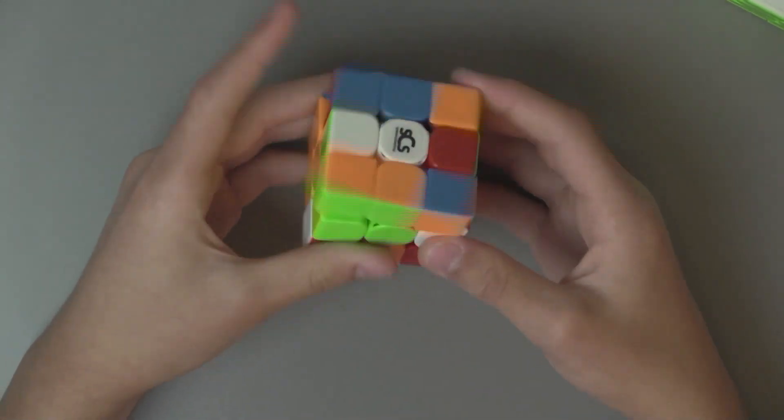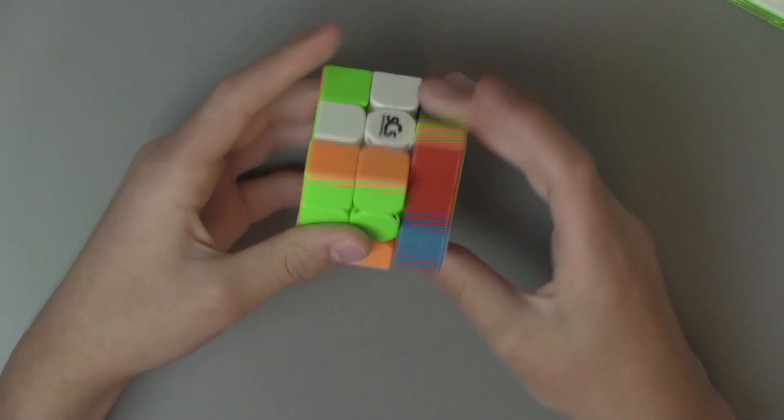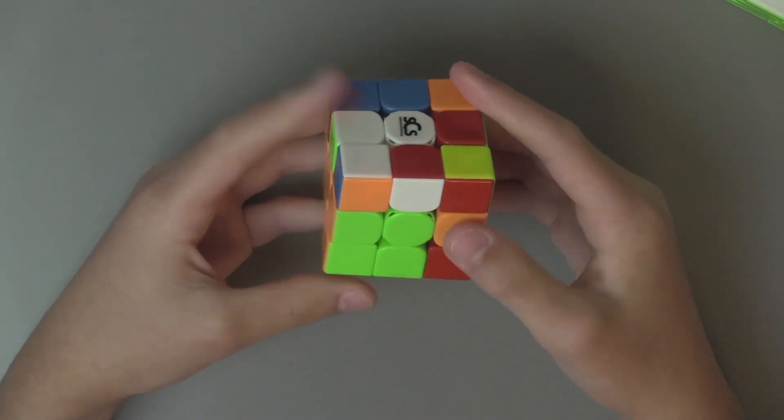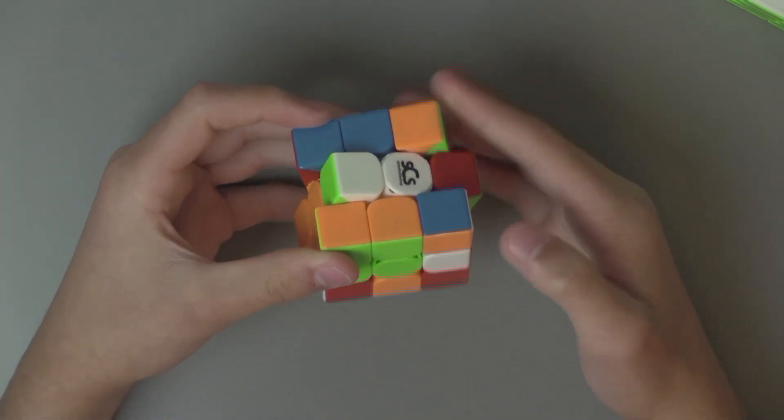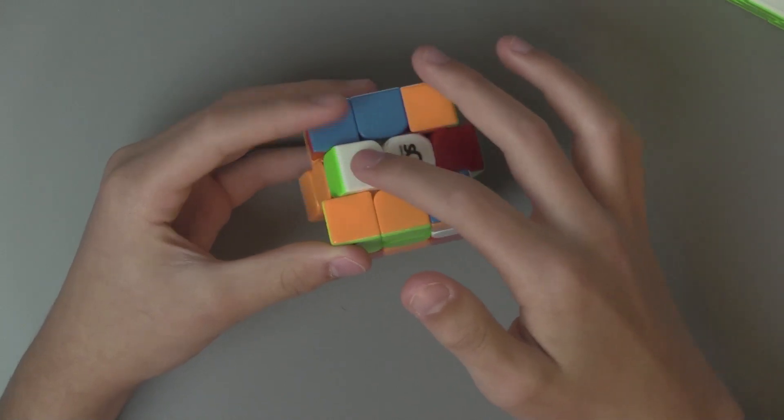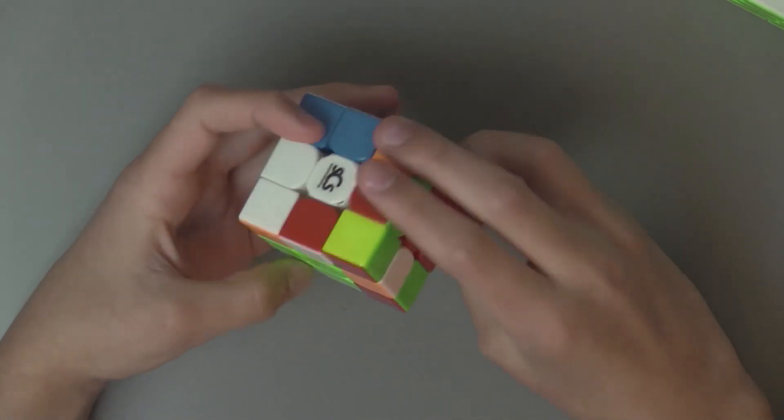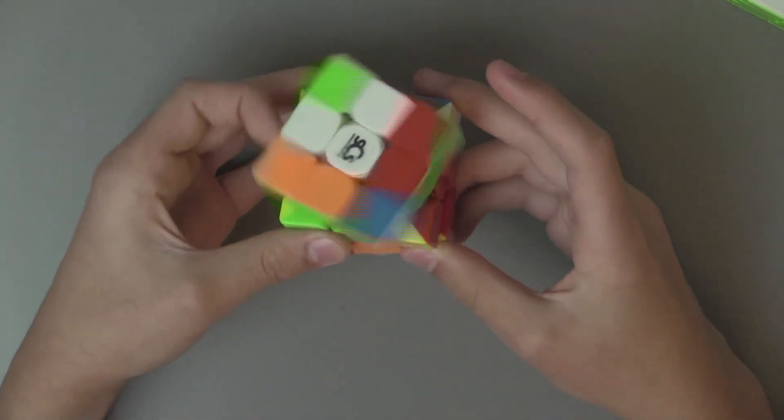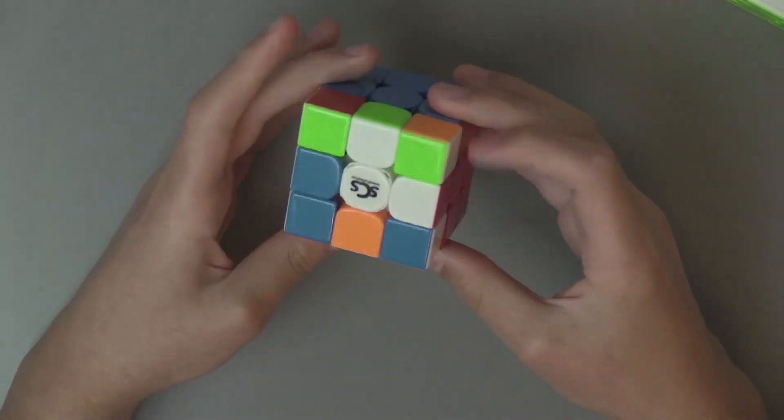But one problem that you come across with the WRM doing this is if you're not holding the middle layer when you do that F, this middle layer will turn. So what I have to do is hold it with my finger, and then it actually ends up in me being slower.